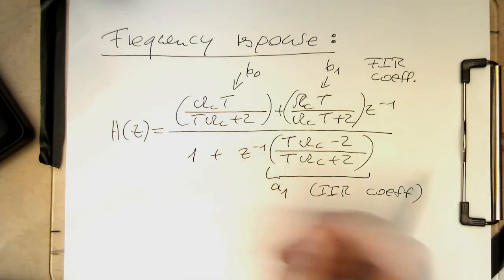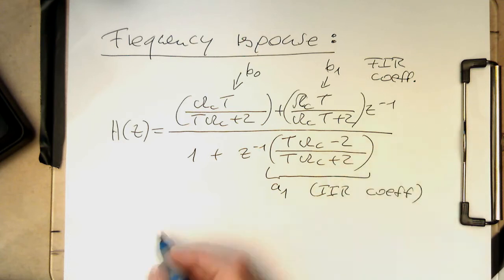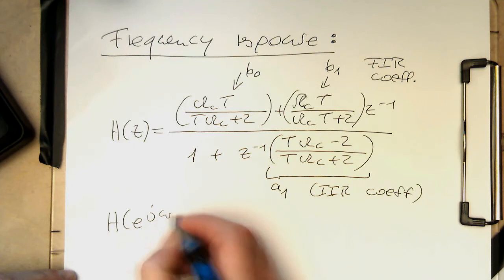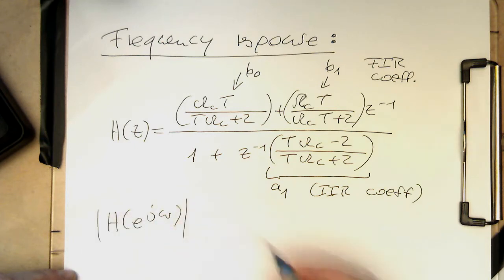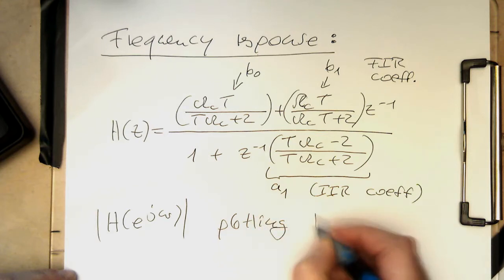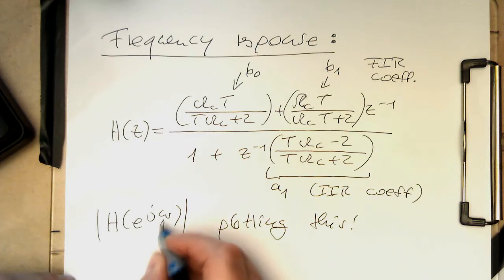So it's nothing dramatic. And so therefore, in order to get the frequency response here, as usual, we're doing the z to e to j omega, and then just plot this. And so the omega is running usually from 0 to 2 pi.